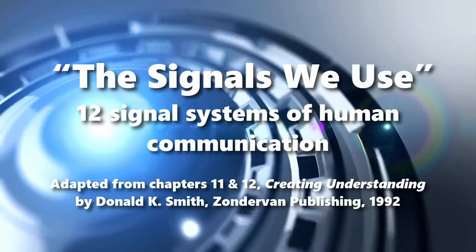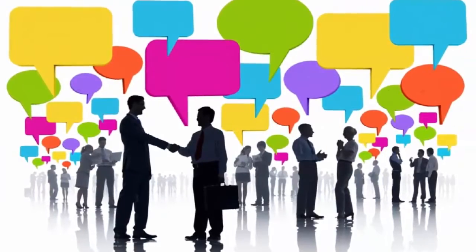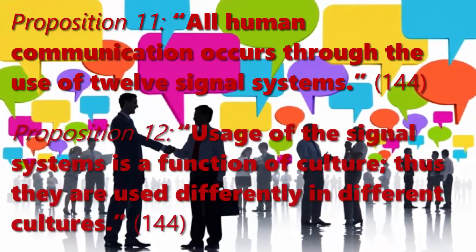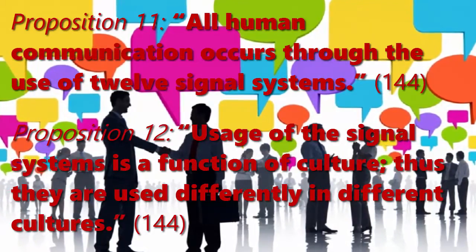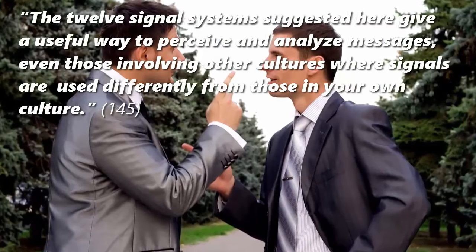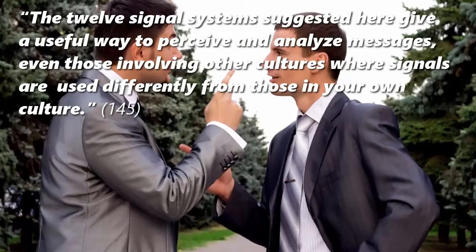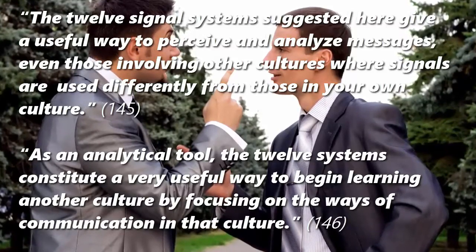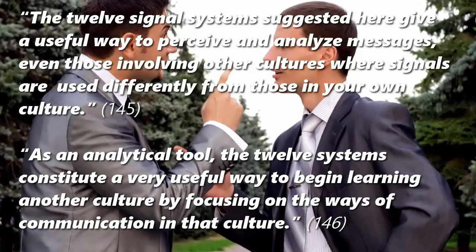The Signals We Use: 12 Signal Systems of Human Communication. All human communication occurs through the use of 12 signal systems. Usage of the signal systems is a function of culture, thus they are used differently in different cultures. The 12 signal systems suggested here give a useful way to perceive and analyze messages, even those involving other cultures. As an analytical tool, the 12 systems constitute a very useful way to begin learning another culture, by focusing on the ways of communication in that culture.